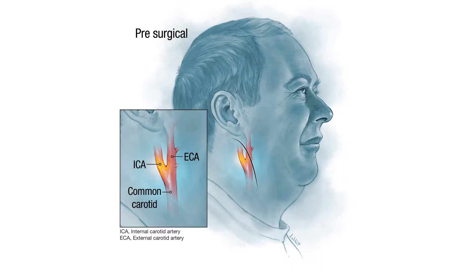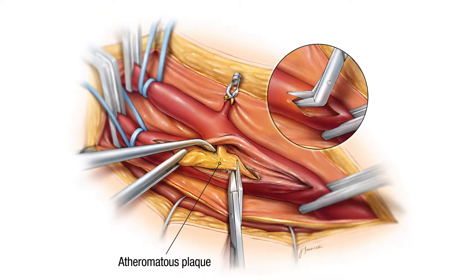The most common cause of problems is when those plaques form a rough edge or a small ulceration, and platelets and blood clots accumulate at that region, then travel upstream and lodge in arteries in the brain, causing a stroke. When a patient presents having had a warning sign for stroke — a TIA or small completed stroke — and the carotid artery is found to be narrowed on the referable side, the preferential treatment is called a carotid endarterectomy.